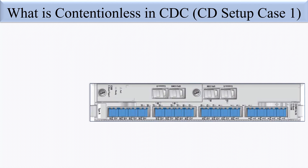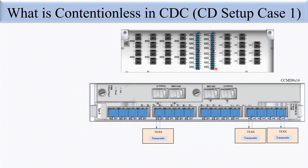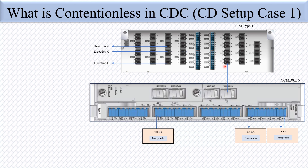In CDC setup case 1, we use the CCMD x16. One transponder's TX/RX is connected, the second transponder is connected, and the third transponder is connected. We are focusing on contentionless, so all three transponders have the same wavelength. Port numbers 1-2, 7-8, and 23-24 are all receiving and transmitting the same lambda — that is the condition of contentionless. This device CCMD x16 has one common port connected to the MP port.